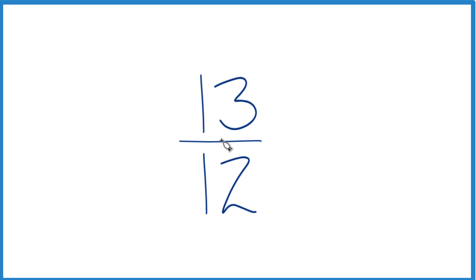So 13 twelfths, the only number that goes into 13 and 12 evenly is 1, so we really can't simplify this any further. It's already in lowest terms.